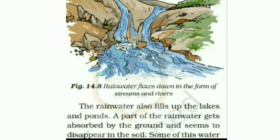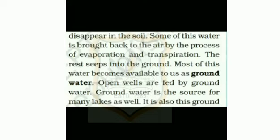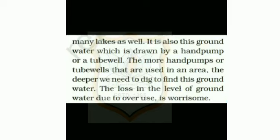A part of the rainwater gets absorbed by the ground and seems to disappear in the soil. Some of this water is brought back to the air by the process of evaporation and transpiration. The rest seeps into the ground. Most of this water becomes available to us as ground water. Open wells are fed by ground water. Ground water is the source for many lakes as well, and it is also this ground water which is drawn by a hand pump or a tube well.